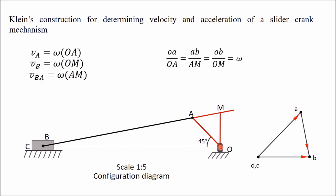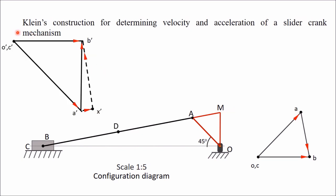Remember that the lengths are drawn in the configuration diagram at a scale of 1:5, so you must multiply by the scale factor. This is the acceleration diagram for this particular case. How to draw the velocity and acceleration diagrams separately is explained in a separate video whose link will be shared in the description box.